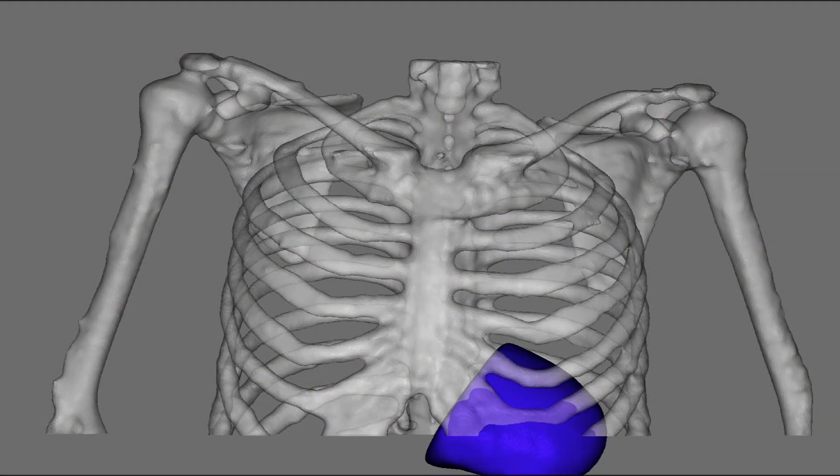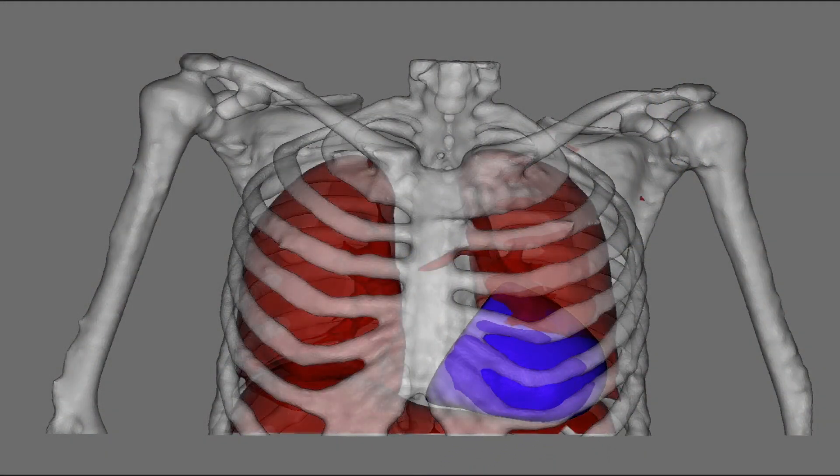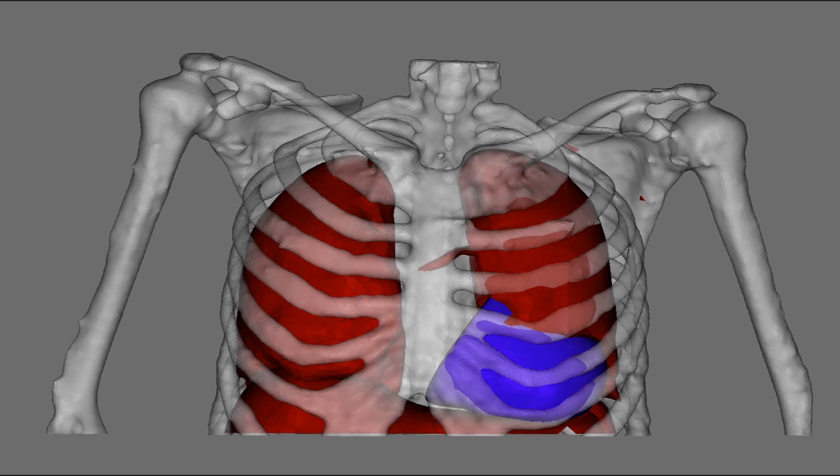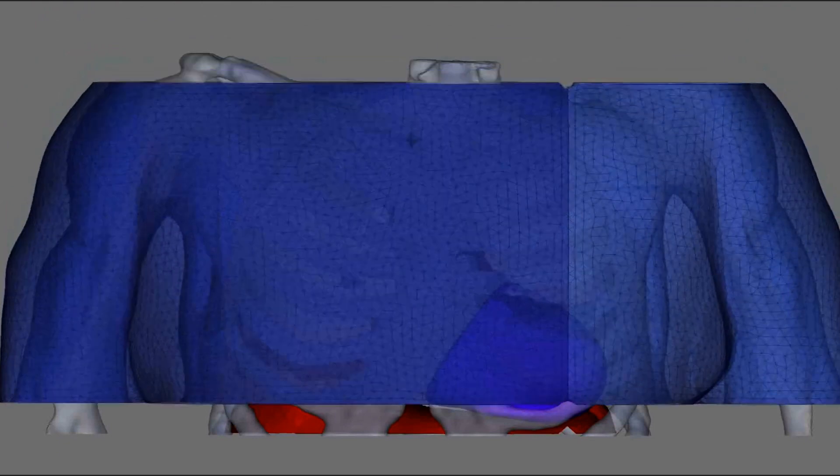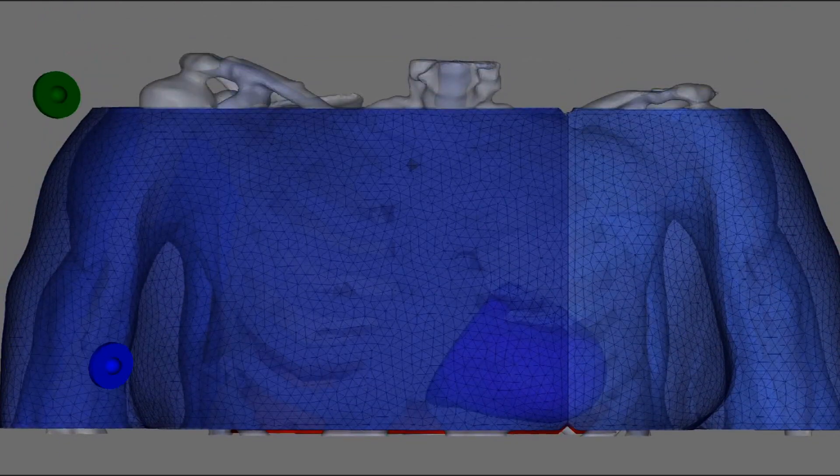We simulate the heart. We simulate the skeleton. We simulate the overall muscles that are around the thorax of a patient. And then we put virtual electrodes on the skin to record the electrical activity. You can model a million patients and see whether there are going to be any adverse effects.